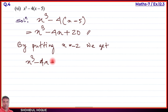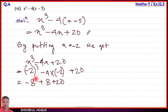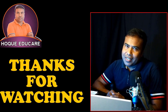By putting x equal to minus 2, we get: (minus 2) cube minus 4 into (minus 2) plus 20. Minus 2 cubed equals minus 8. Minus 4 into minus 2 equals plus 8. Plus 20. So minus 8 plus 8 cancels to zero, leaving 20. The answer is 20. That completes question number 4, parts one to six. See you in the next video.